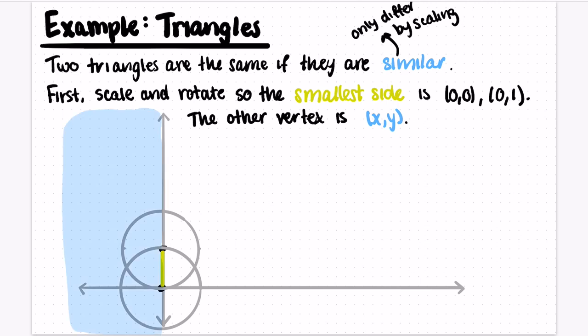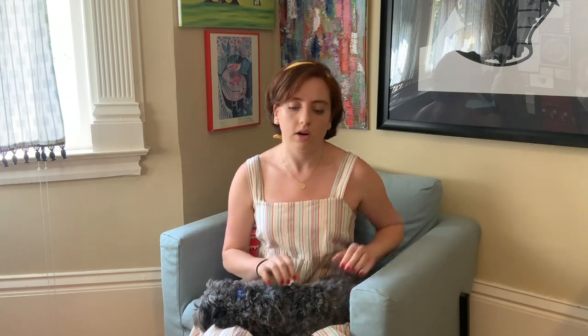So our points have to come from outside of these two circles. What happens if the point comes from the left half of the plane? If the point comes from the left half of the plane, then we could just flip the triangle to the right half of the plane. These two triangles are similar, so we can ignore the points coming from the left half of the plane, since we want our moduli space to only have one point for each similar triangle.